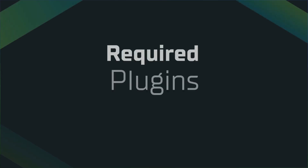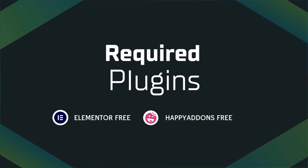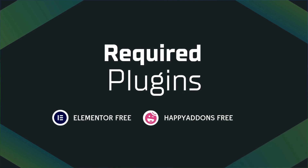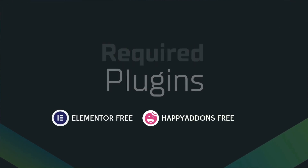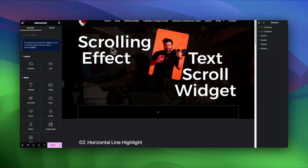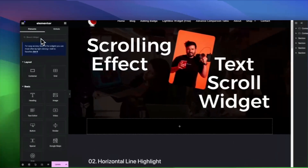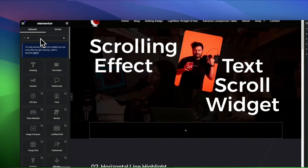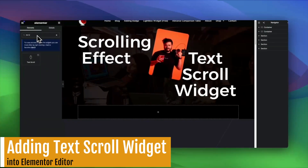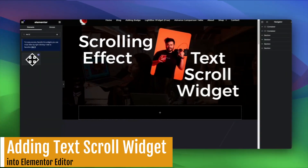You need Elementor and Happy Addons free plugins to use the widget. To get started, open the Elementor editor, search for Text Scroll and drag it onto your page. It's as simple as that.